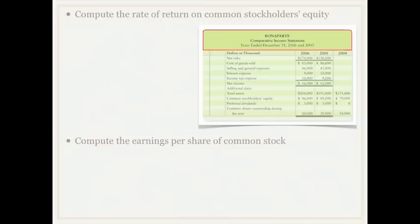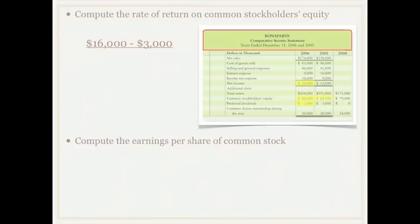I hope that you have calculated the two ratios: the rate of return on common stockholders' equity and the earnings per share of common stock. The formula for calculating the rate of return on common stockholders' equity is net income less preferred dividends, divided by the average common stockholders' equity. We need net income and preferred dividends for our numerator, then divide by average common stockholders' equity — beginning stockholders' equity plus ending stockholders' equity divided by two. In this case, our rate of return on common stockholders' equity is 14.1 percent.